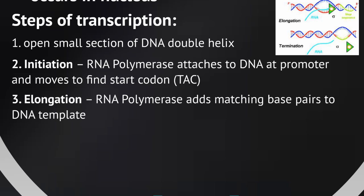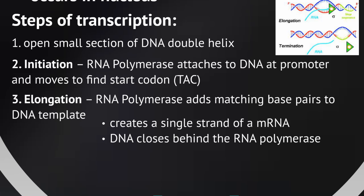Elongation is when the RNA polymerase is actually adding matching base pairs to the DNA template. It uses the same base pairing rules we've already discussed, moving along and adding the right base pair. This creates a single strand of messenger RNA, while the DNA double helix closes up right behind the RNA polymerase.